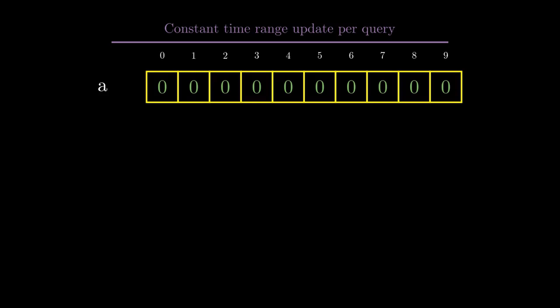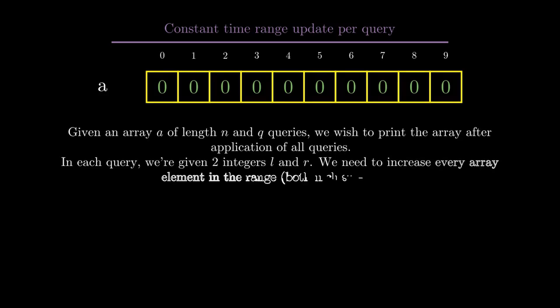This is the central concept of the problem. We need to do constant time range update per query. Let's define our problem statement formally. We are given an array of length n and q queries, and we wish to print the final array after the application of all queries. In each query, we are given two integers l and r, and we need to increase every array element in the range [l, r] by one.